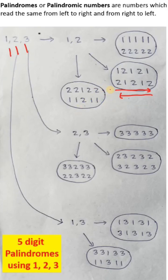Palindromes or palindromic numbers are the ones which read the same if you read from left to right or right to left. So in this way, 2, 1, 2 is a palindrome, right?